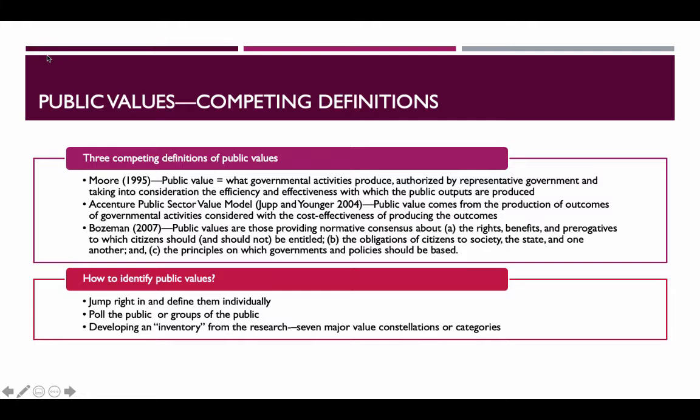One suggestion is that whenever you talk about public values, just define them as you talk about them — don't leave it ambiguous. When you say there is a public value in taking care of the elderly, just say why there is a public value. The idea is that if you identify something as a public value, it will become one. But when you're trying to justify your existence as a government, nonprofit, or other public organization, that gets tricky, and managers are often constrained in defining what the role of the organization is.